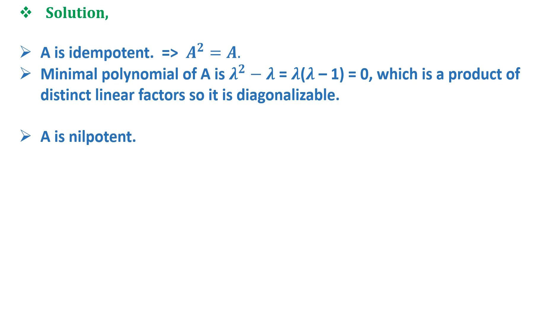Option B says that A is nilpotent matrix. Now let us take an example for 2×2 nilpotent matrix. Here the algebraic multiplicity of 0 is 2 whereas geometric multiplicity is 1 so it is not diagonalizable.